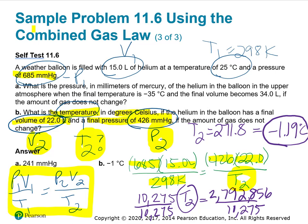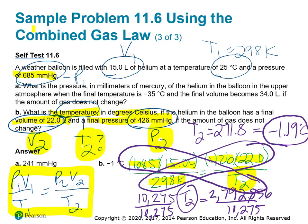I did the same cross-multiplying. T2 times 15 times 685 gave 10,275. Then I multiplied 298 times 426 times 22 to get this really big number. Let's divide both sides by 10,275 to get T2 by itself, and we get 271.8. That's in Kelvin. We want Celsius, so I subtracted 273 and got negative 1.19 degrees Celsius. There should be three significant figures, so negative 1.19.